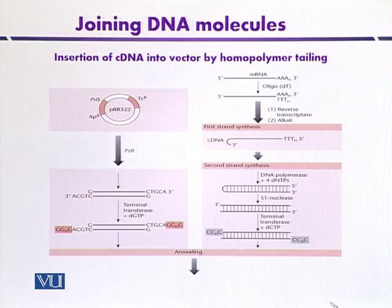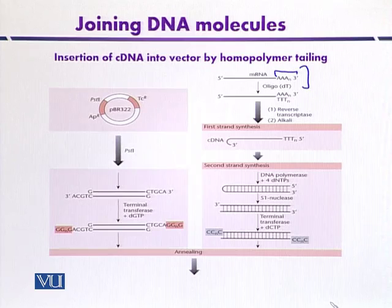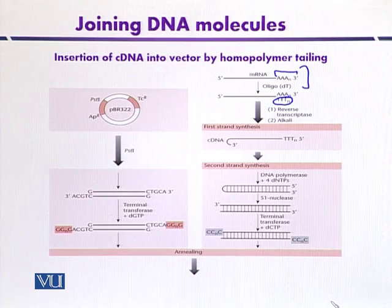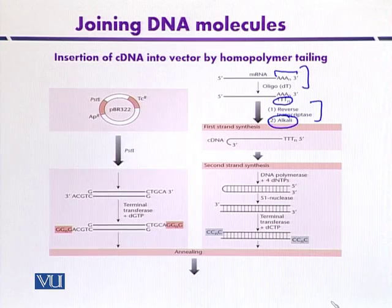Here we have the messenger RNA. As mentioned, naturally this messenger RNA has a stretch of 200 adenine residues at its 3' end. So we can easily provide a primer that is complementary to the adenine residues, and with the help of reverse transcriptase, it will mediate the synthesis of the first strand of the DNA. The messenger RNA is then hydrolyzed by the use of alkali. This is the first strand synthesis mediated by reverse transcriptase.